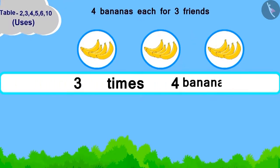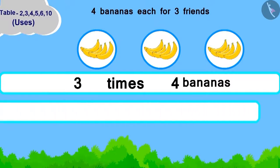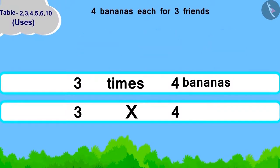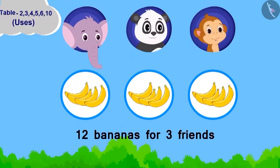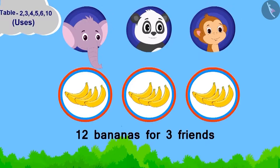Three times four bananas. How will we write it in the form of multiplication? Three multiplied by four. Children, can you write its answer by using the table of four? Absolutely right. Chanda will have to take twelve bananas for her three friends.